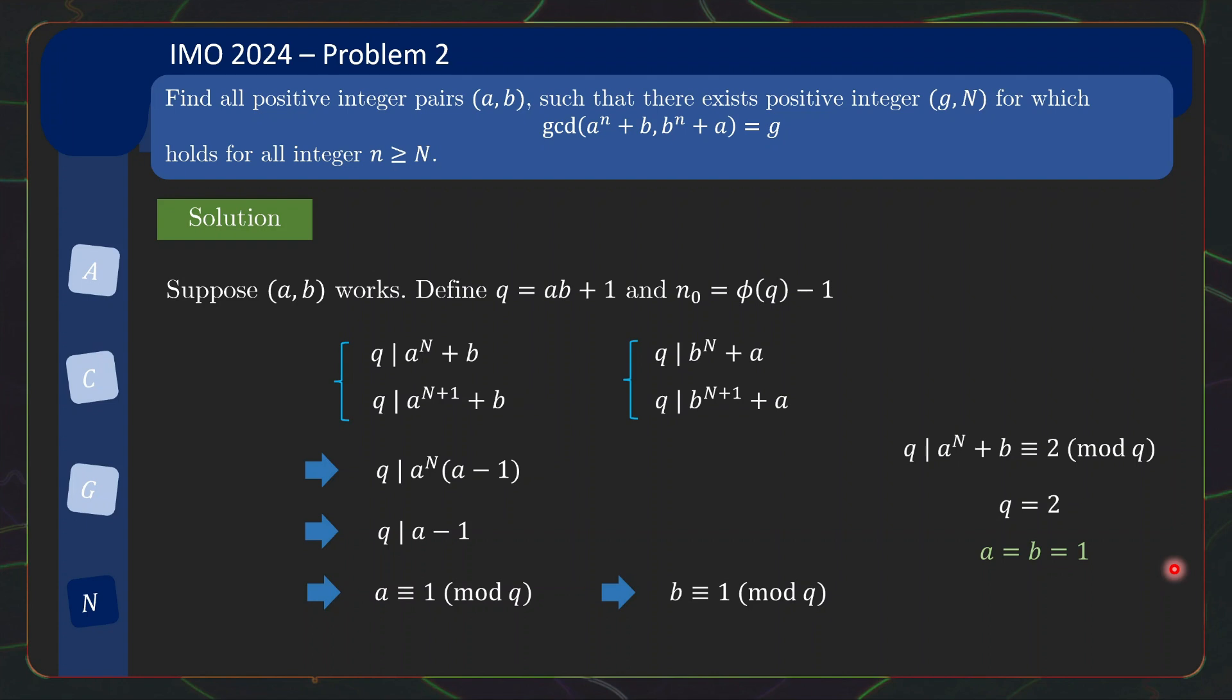So this forces the only possible candidate to be this. And lastly, you just need to check that this solution indeed works as we have checked earlier when talking about the motivation. So that is all to the proof to problem 2.